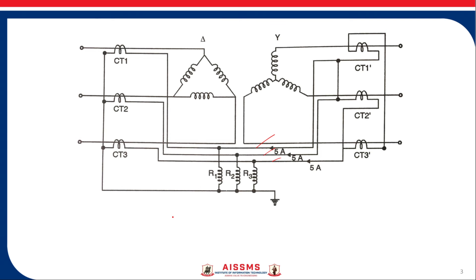Let us start to solve the numerical. The CT secondary current on the delta side of this power transformer equals the current flowing through the pilot wire, because the CTs on the delta side of the power transformer are connected in star. So we can say that the CT secondary current equals 5 amperes.